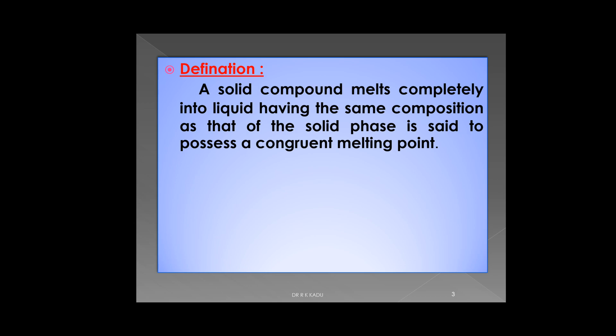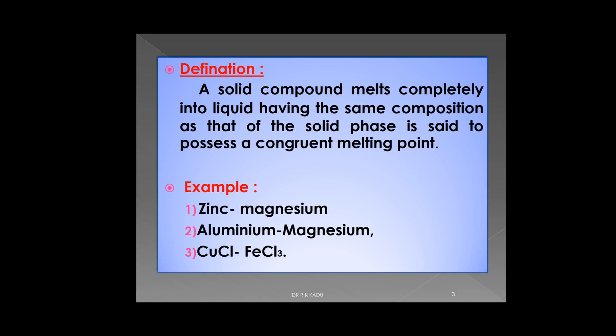As a definition: a solid compound that melts completely into liquid, having the same composition as that of the solid phase, is said to possess a congruent melting point. Examples of systems that obey congruent melting points are: the zinc-magnesium system, the aluminium-magnesium system, and the CuCl-FeCl₃ system.